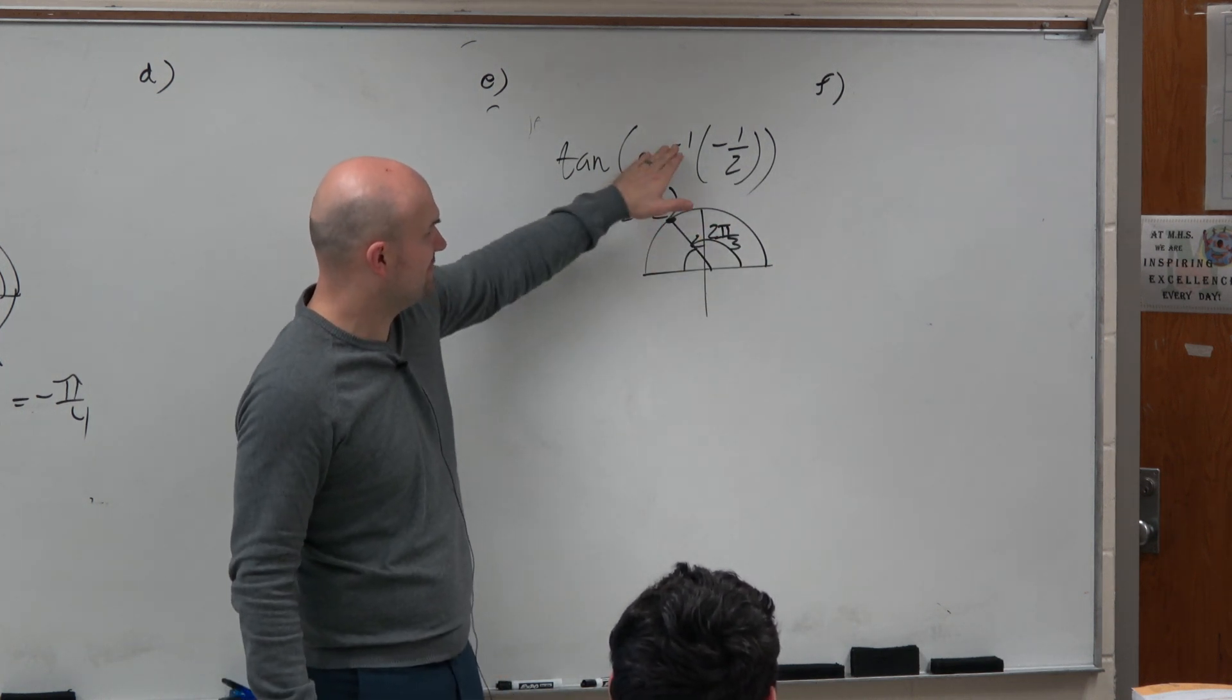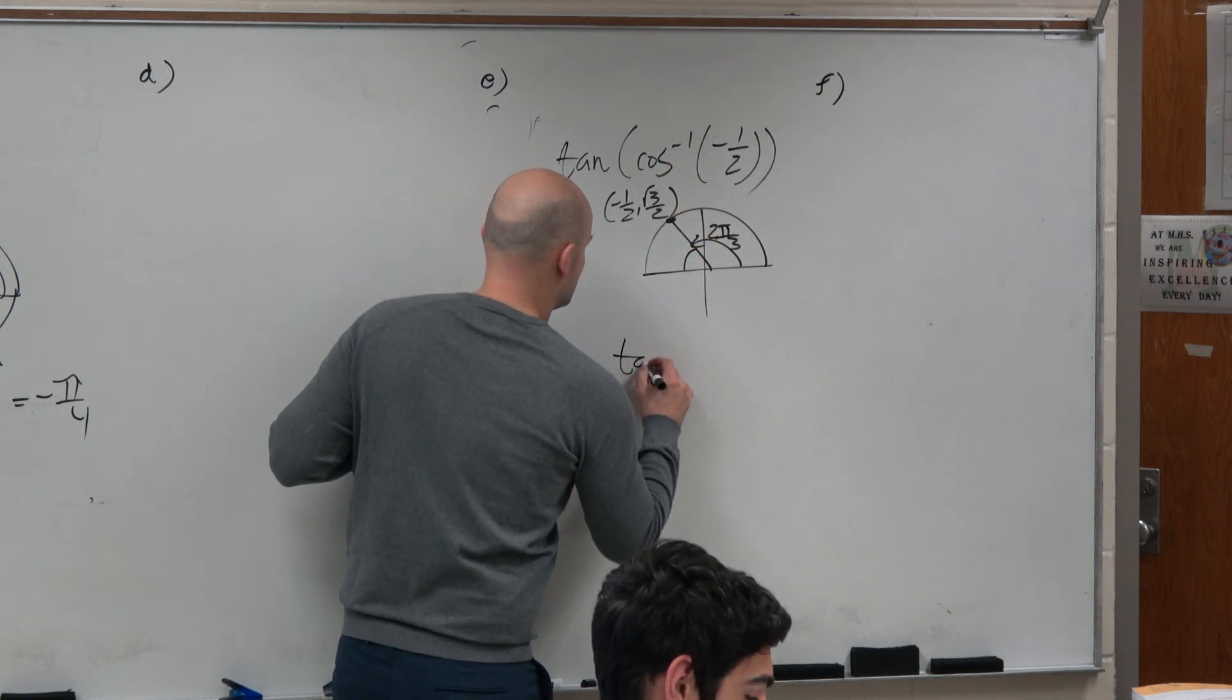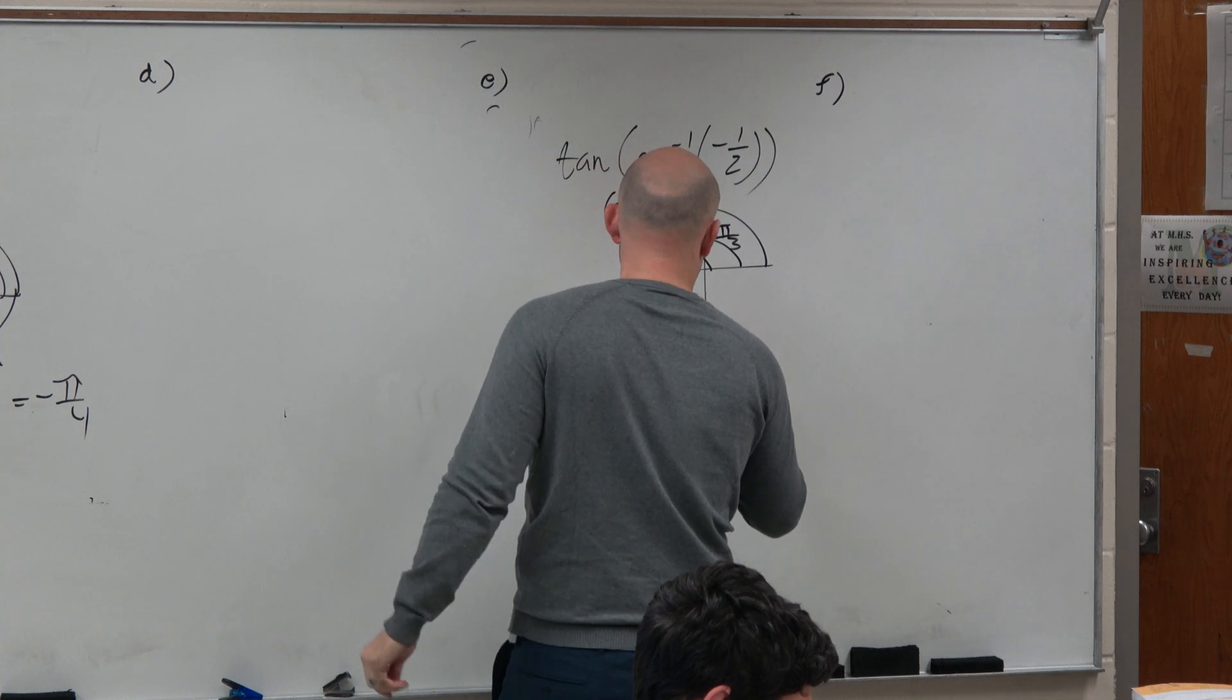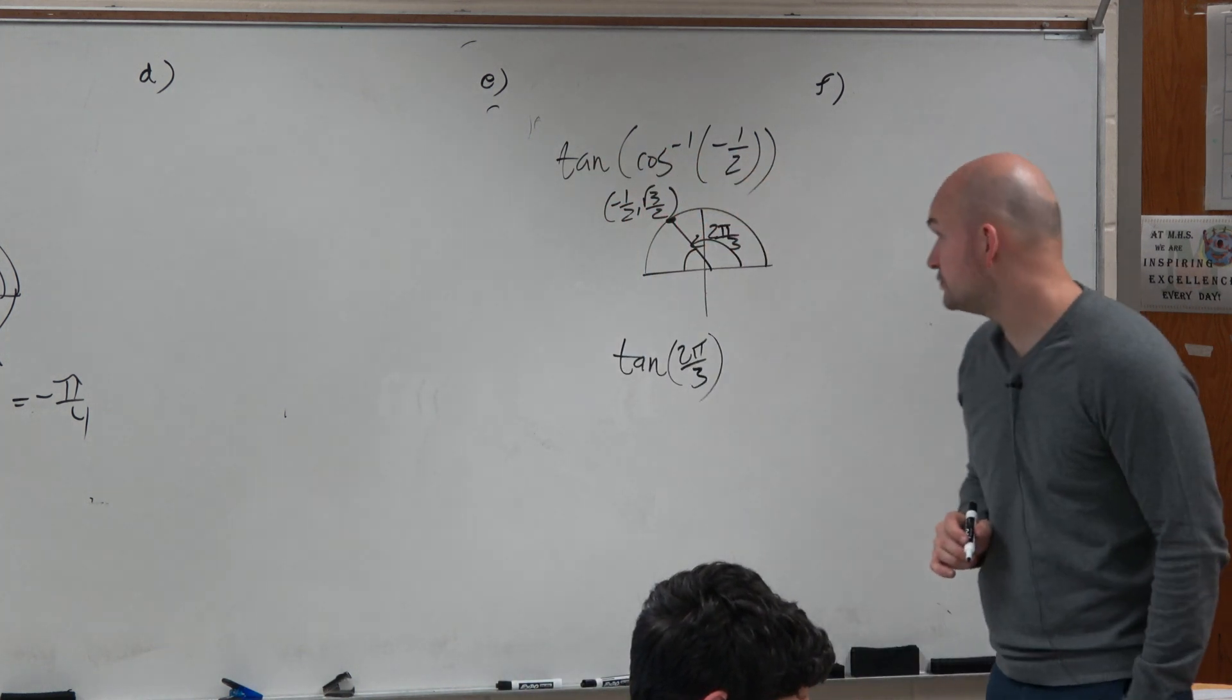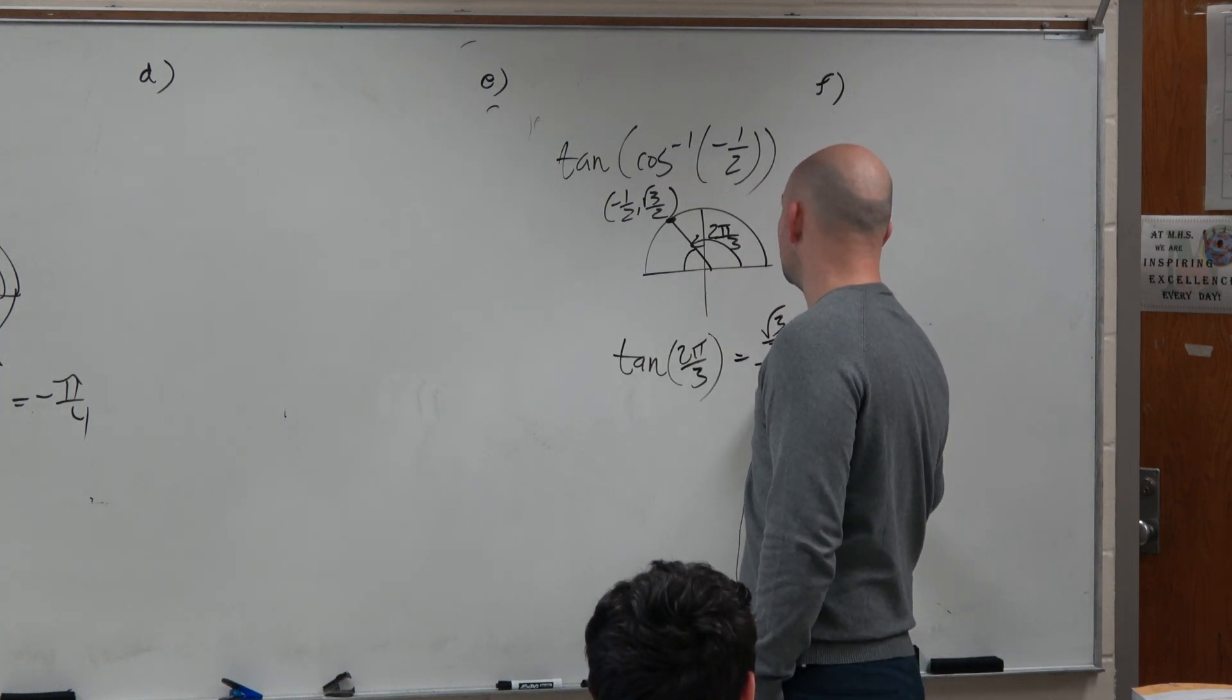So therefore, the cosine inverse of negative pi over 3 is just going to be 2 pi over 3. So then I have tangent of 2 pi over 3. And the tangent of 2 pi over 3 is, again, the y coordinate over the x coordinate.